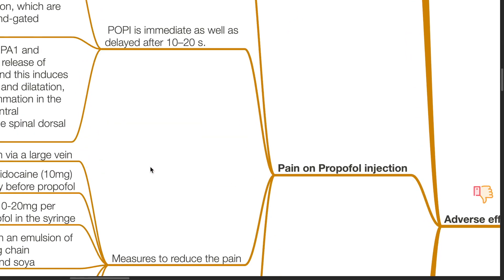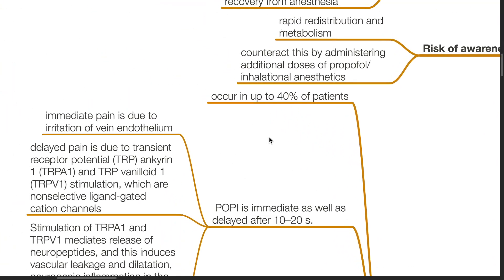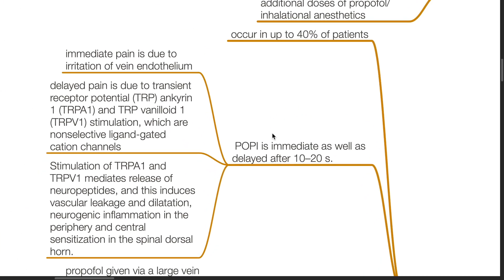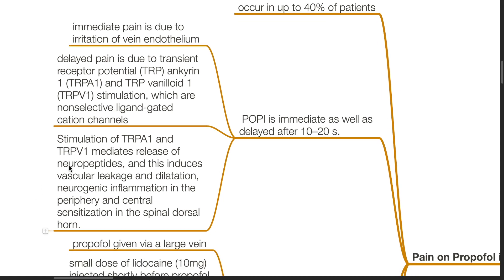Pain on propofol injection can occur in up to 40% of patients. Pain on propofol injection (POPI) is immediate as well as delayed after 10 to 20 seconds. Immediate pain is due to irritation of the vein endothelium, and delayed pain is due to stimulation of transient receptor potential ankyrin-1 and TRP vanilloid-1 — non-selective ligand-gated cation channels. Stimulation of these receptors mediates release of neuropeptides, inducing vascular leakage and dilation, neurogenic inflammation in the periphery, and central sensitization in the spinal dorsal horn.